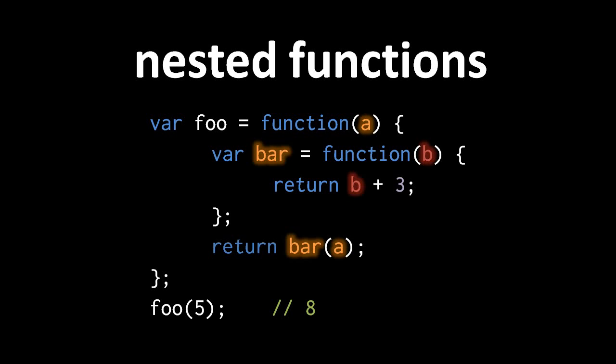The var statement for var bar is inside the outer function, so it's declaring a local of that outer function. If we had a var statement in the curly braces of the inner function, that would be declaring a local of the inner function. In this example, we call foo with the argument 5 — 5 gets passed to a. Inside the function we have an interior function assigned to the local bar, and our return statement calls bar with the argument a, so we're calling that interior function with argument 5. 5 gets passed to b, and inside that function we return b plus 3, so that's 5 plus 3; we return 8, and so the outer function also returns 8.